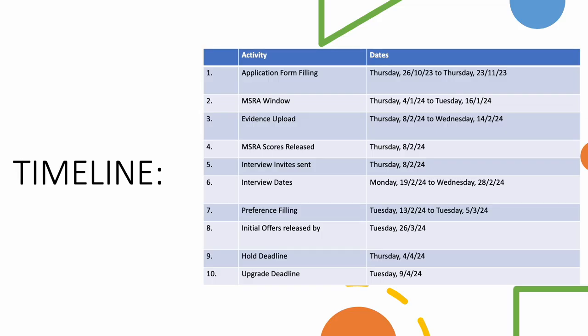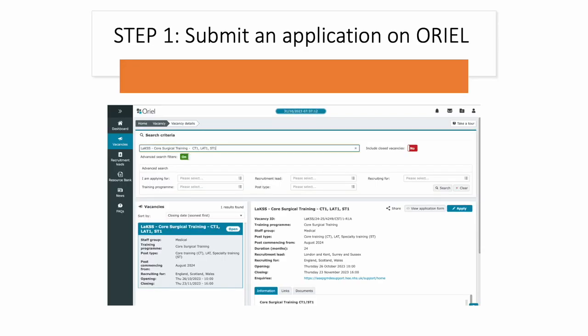Before that, you need to get familiarized with the timeline of the application process as there would be no extensions in the deadline. Application form filling has already opened since the 26th of October until the 23rd of November, so you need to start filling your application soon. Now let's get started with the step-by-step process for CST applications. Step 1 is submitting an application on the portal called Oriel. After making your Oriel profile, go to the vacancies tab and search for core surgical training to begin your application.